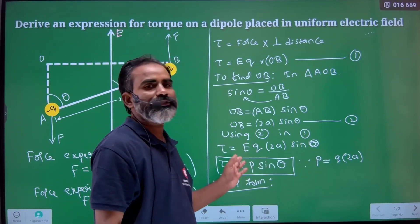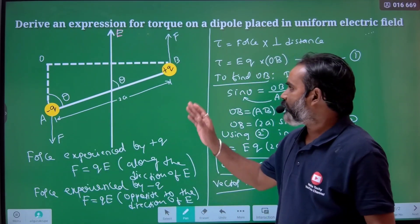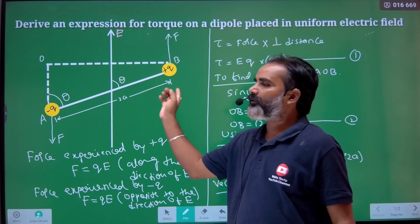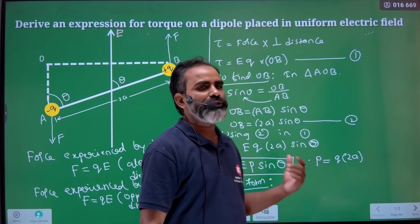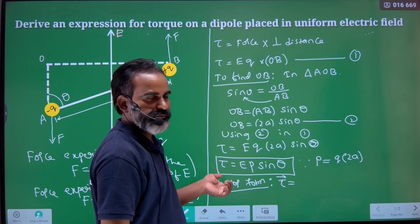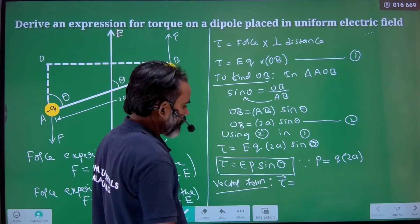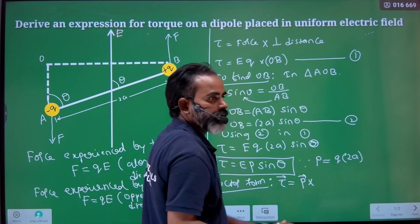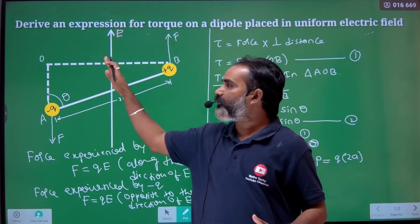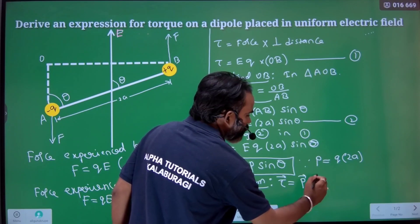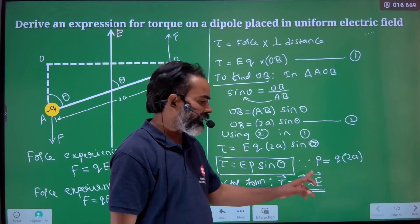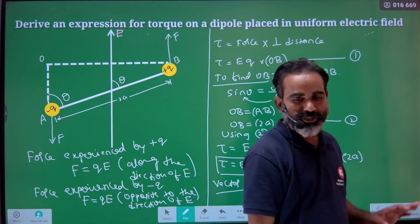In vector form: when we have sin theta it corresponds to a cross product, and cos theta corresponds to a dot product. Since the dipole is rotating with respect to the fixed electric field E, we take p cross E. The correct vector form is tau equals p cross E. Here p is the dipole moment and E is the electric field. The direction of torque is perpendicular to the plane containing p and E.